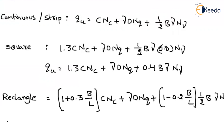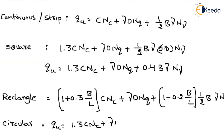For a circular footing, the factor for Nc is 1.3, so qu equals 1.3·C·Nc. The factor for Nq is 1, so we add γ·D·Nq. The factor for Nγ is 0.6, and 0.6 times one-half equals 0.3, so the last term becomes 0.3·B·γ·Nγ.